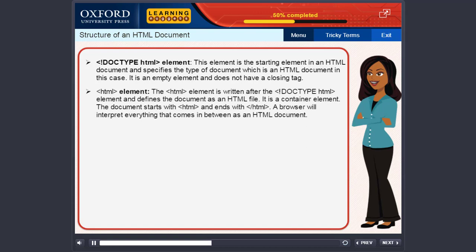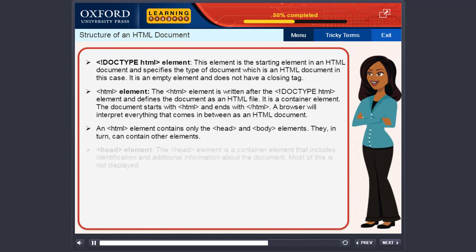HTML element. The HTML element is written after the doctype element and defines the document as an HTML file. It is a container element. The document starts with an opening HTML tag and ends with a closing HTML tag. A browser will interpret everything that comes in between as an HTML document. An HTML element contains only the head and body elements. They, in turn, can contain other elements.